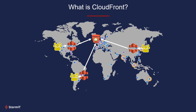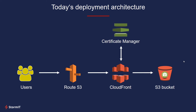Before we jump into the hands-on, I'd like to quickly go over today's deployment architecture. We'll have a static website inside an S3 bucket, and this website will contain a GIF — something a bit larger than a plain static page, so the difference between using and not using CloudFront might be more noticeable. Then there's our CloudFront distribution and our users, and between them is something called Route53. For those who don't know what Route53 is, don't worry — it's Amazon's DNS routing service. When users want to access their content, they access it through Route53, which redirects them to CloudFront.